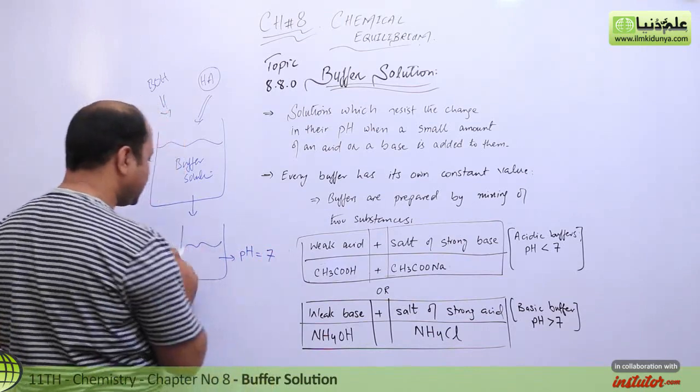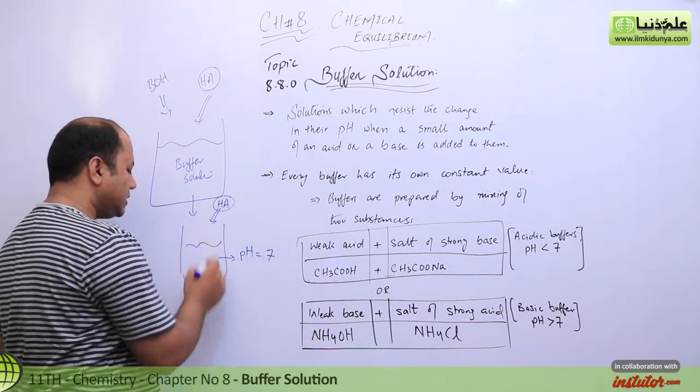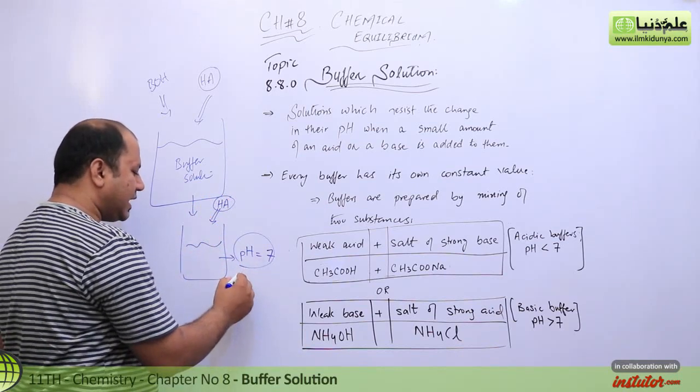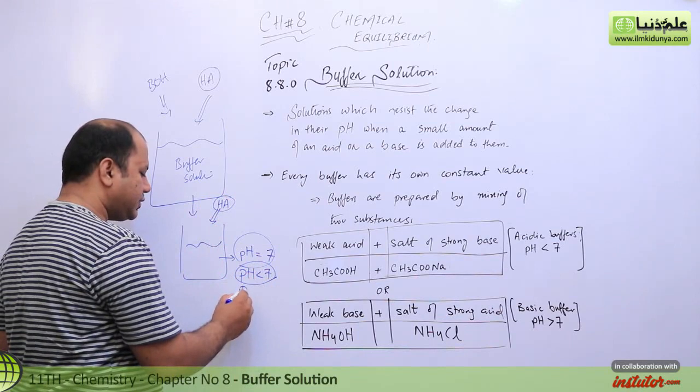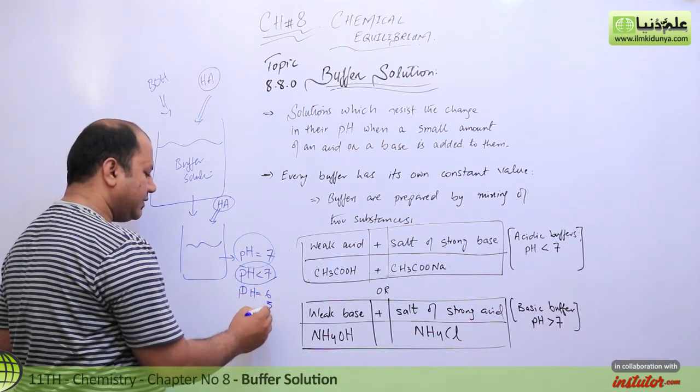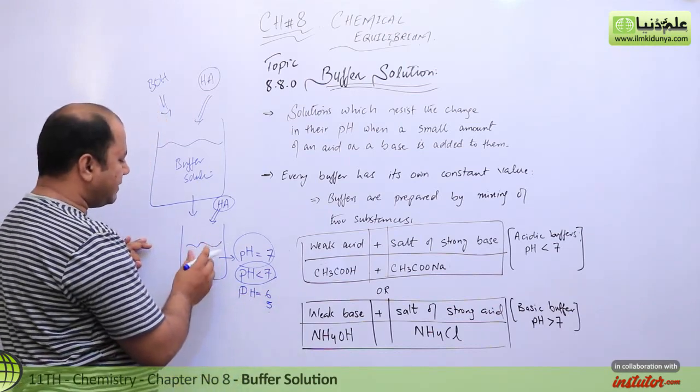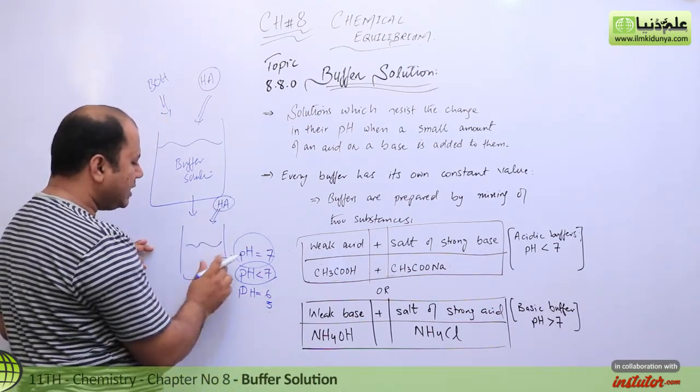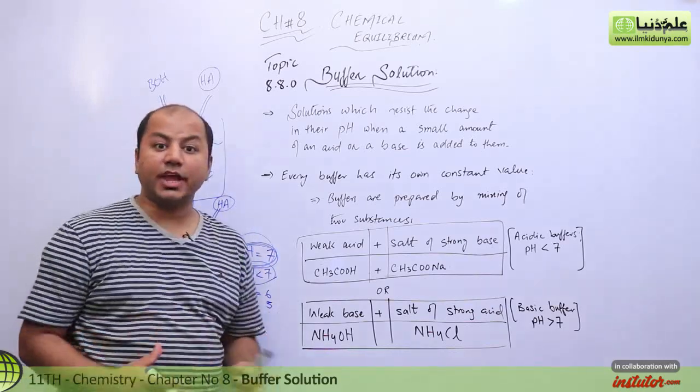If you add any acid in it, then what will happen is that the pH is less than 7, can go up to 6, up to 5. But buffer solution is what happens when you add a buffer solution - it will just keep the pH at 6 to 5. But buffer solution ion ke izafe se solution ki capacity hoti hai ki wo acidic nature show na kare.